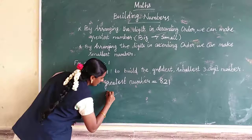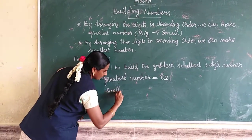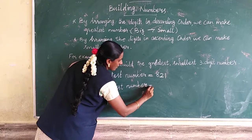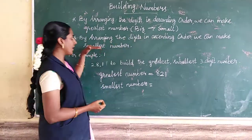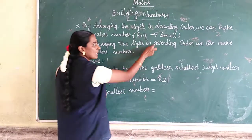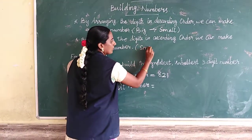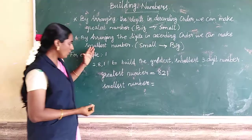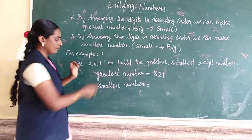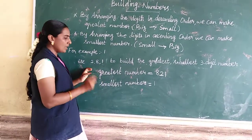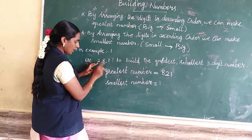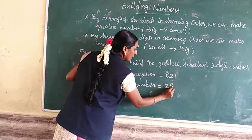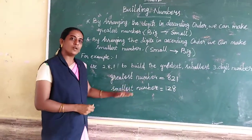Now find the smallest number. Smallest number uses ascending order — small to big. Which is the smallest number? 1. Next smallest is 2. Last one is 8. So the smallest number is 128.